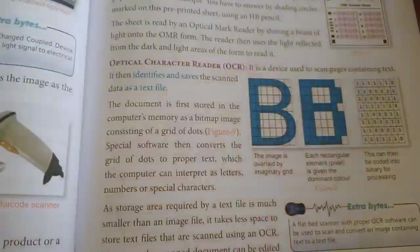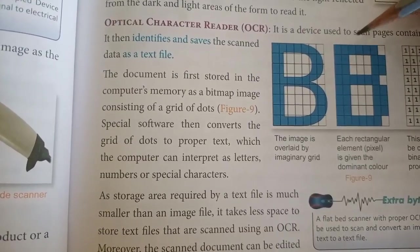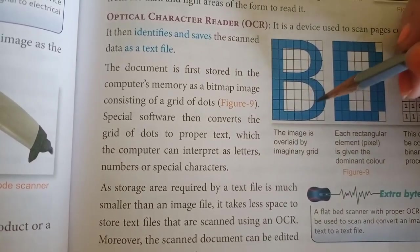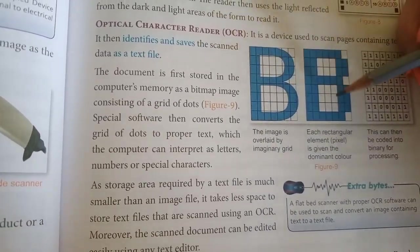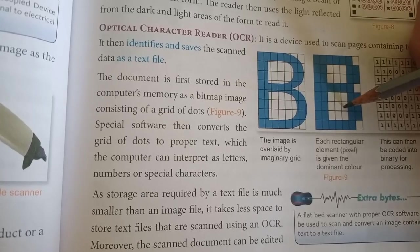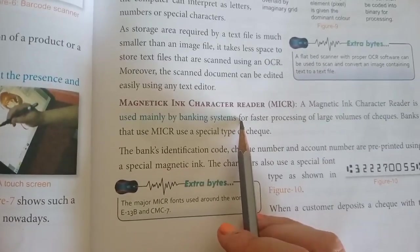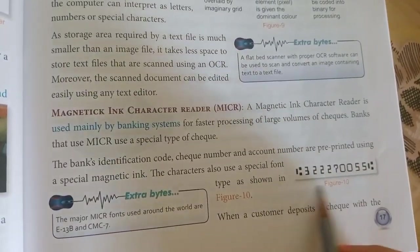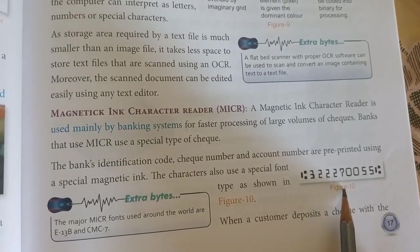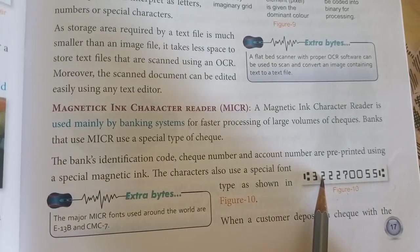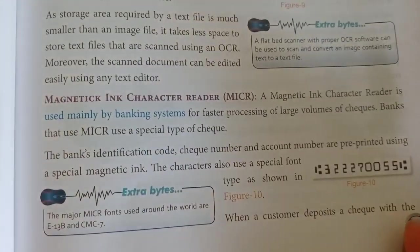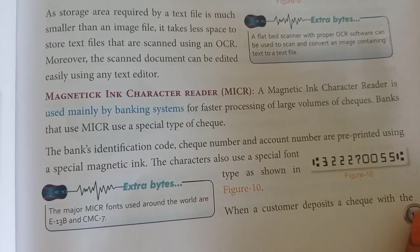Next is OCR, Optical Character Reader. It is a device which scans pages and text, identifies characters hidden behind dotted lines, and converts them into proper text and letters to be read. Then comes MICR, Magnetic Ink Character Recognition, mainly used in the banking system. On a cheque, a code is written with special ink, which is read by the MICR to provide information about the cheque holder — who the person is, how much amount is in their bank, and whether they are applicable to pay that amount.